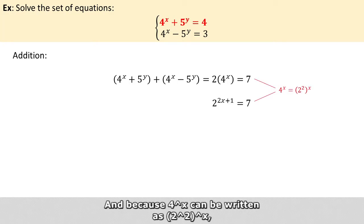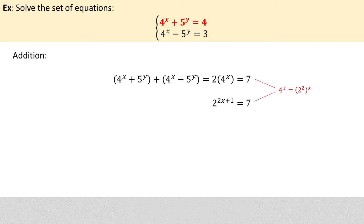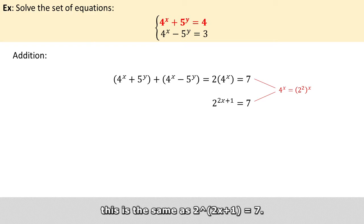And because 4 raised to the power of x can be written as 2 squared raised to the power of x, this is the same as 2 raised to the power of 2x plus 1 equals 7.